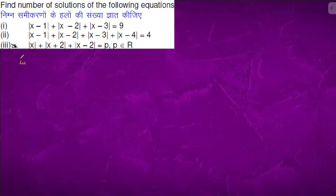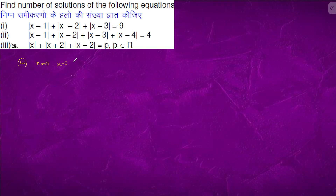Question number 3. We have 3 critical points: x equals 0, x equals 2, and the least one is x equals minus 2. So ordering them: minus 2, then 0, then 2.